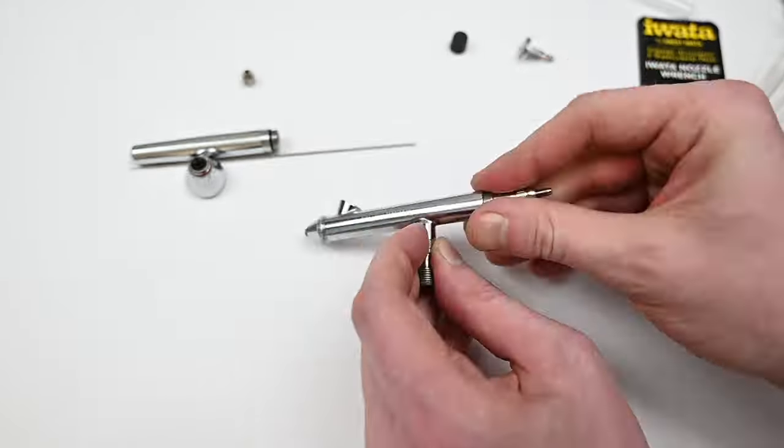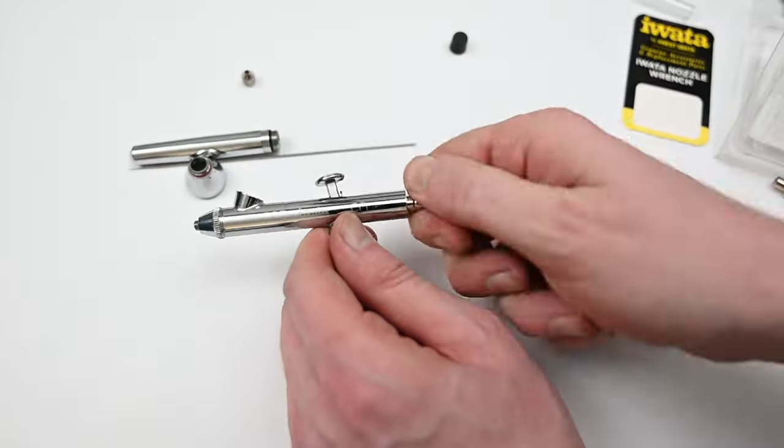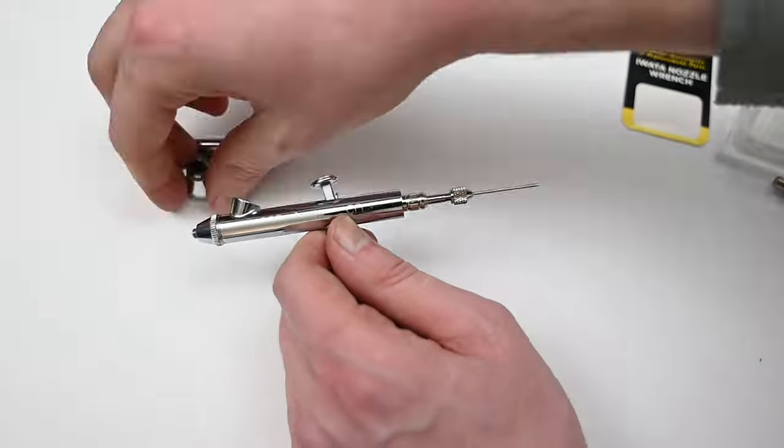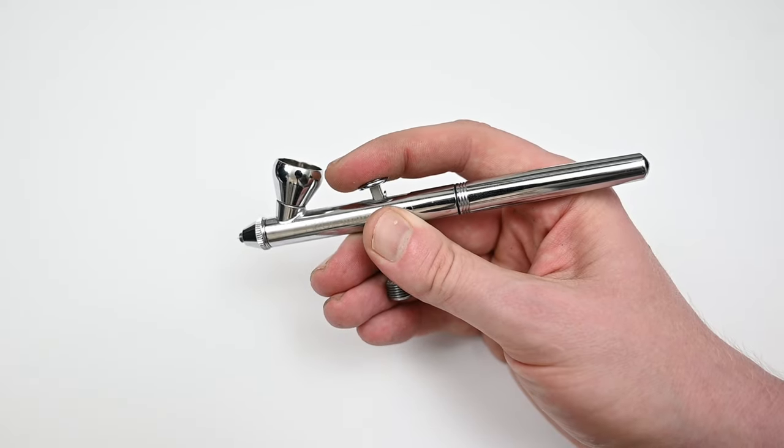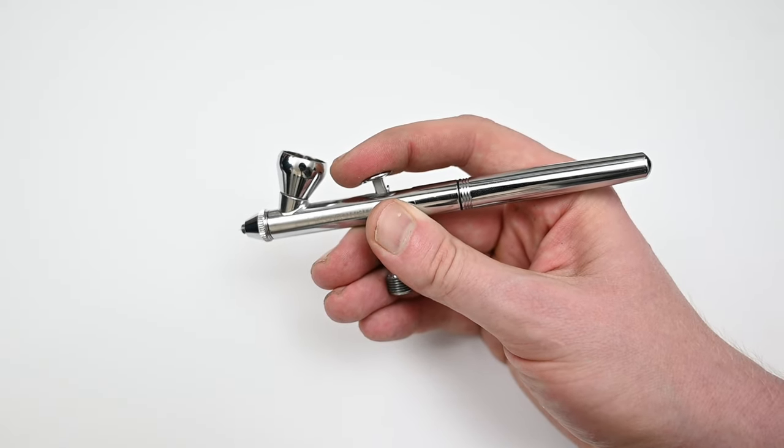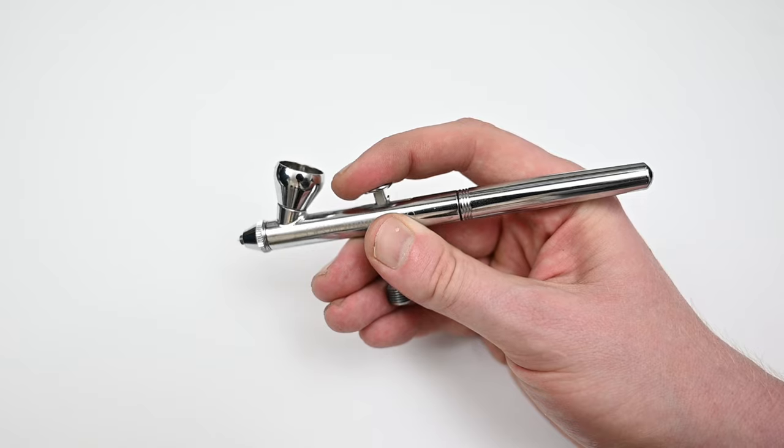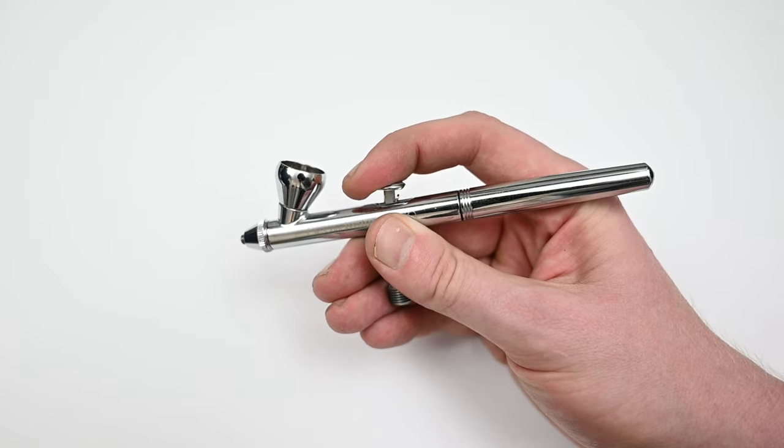So I'd have to say that the build quality of the Neo is pretty good. It's not going to be up there with higher-end brands like Harder and Steambeck or Iwata, but I'd say that it's on par with most Badger airbrushes and it's definitely better than any of those cheaper, no-name brand airbrushes that you get on Amazon. I definitely don't have any complaints with the build quality.